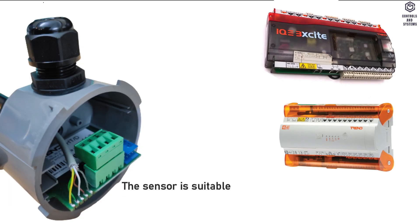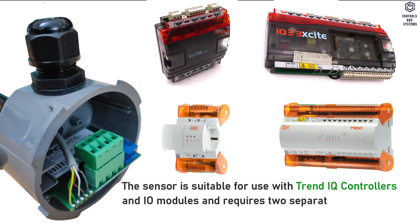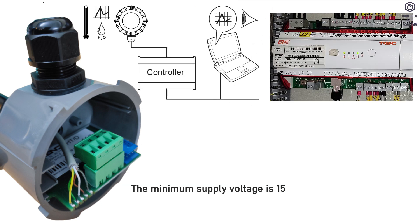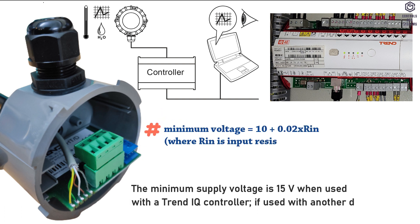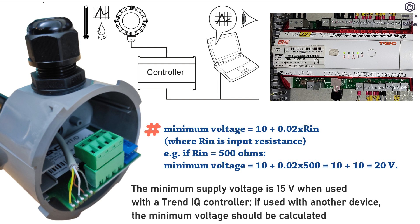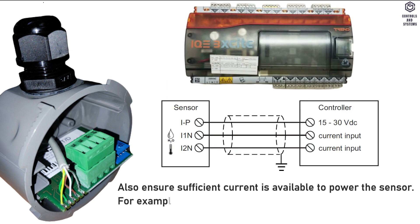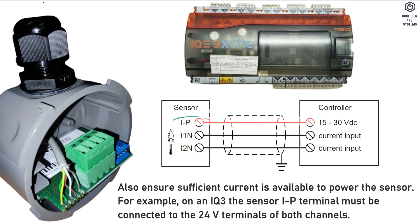The sensor is suitable for use with Trend IQ controllers and IO modules and requires two separate input channels: one for humidity, one for temperature. The minimum supply voltage is 15 Volt when used with a Trend IQ controller. If used with another device the minimum voltage should be calculated as follows. Also ensure sufficient current is available to power the sensor. For example, on an IQ3 the sensor IP terminal must be connected to the 24 Volt terminals of both channels.